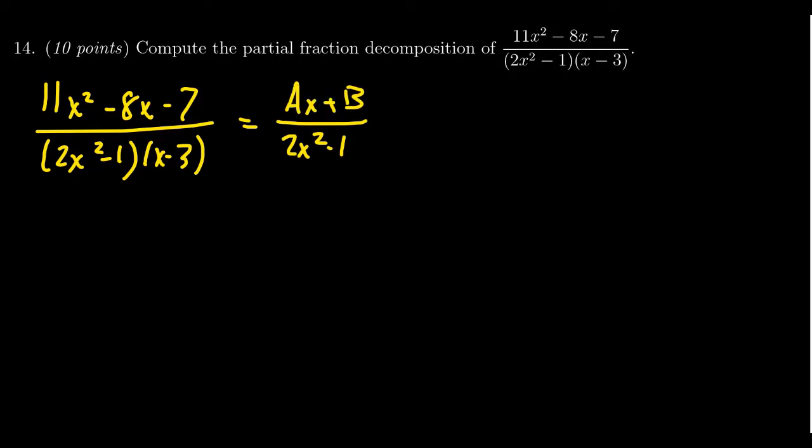Given that you could factor 2x squared minus 1 using the difference of squares, it would be irrational, but you could do that if you wanted to have linear factors. I'm going to leave it as this irreducible quadratic instead.